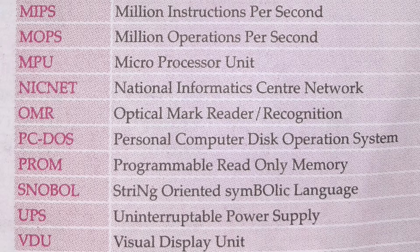MIPS — Million Instructions Per Second — is an approximate measure of a computer's raw processing power. MIPS figures can be misleading because measurement techniques often differ, and different computers require different sets of instructions to perform the same activity.